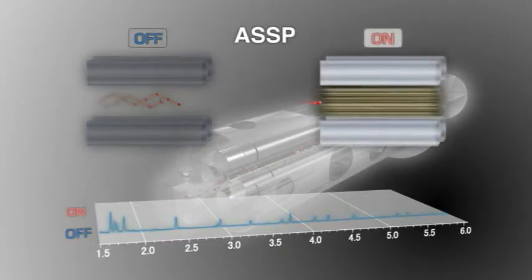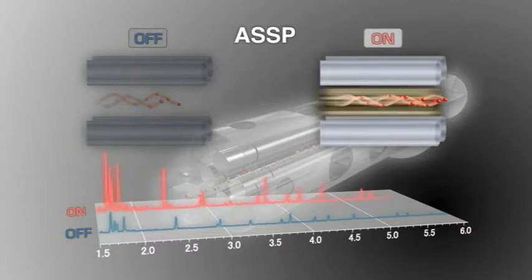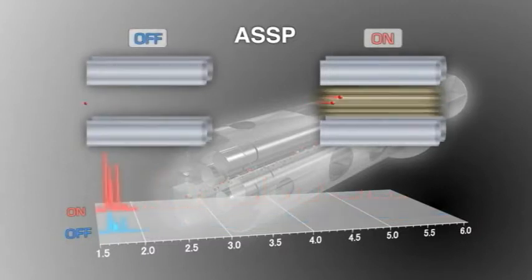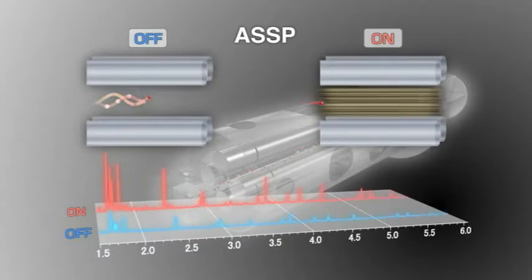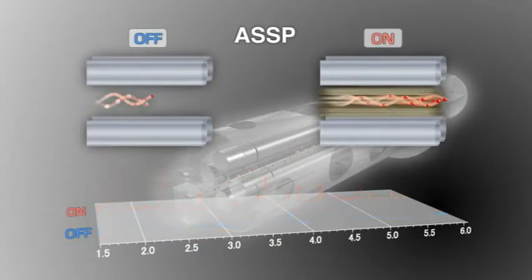ASSP automatically optimizes the rod bias voltage during ultra-high-speed data acquisition, thereby minimizing the drop in sensitivity and spectrum skewing that is normally associated with very fast scanning.